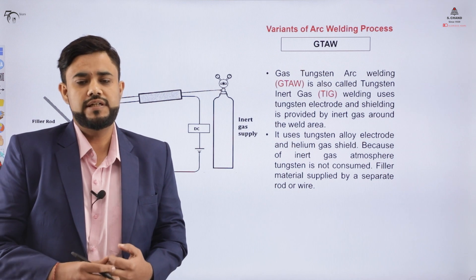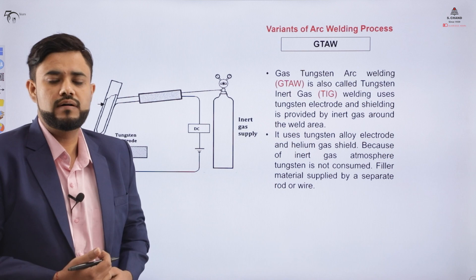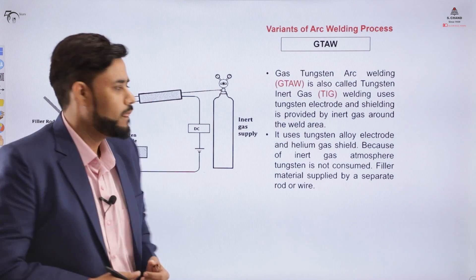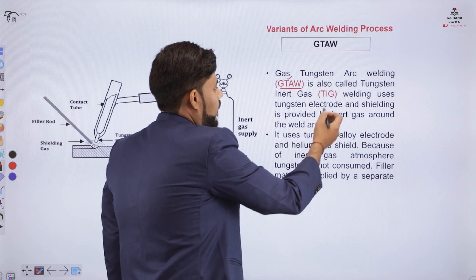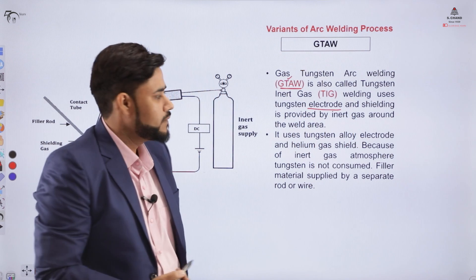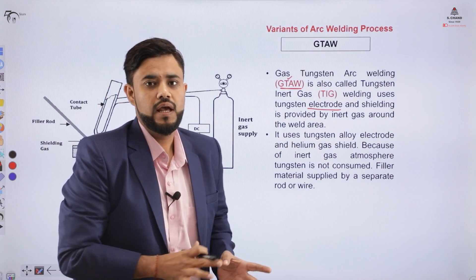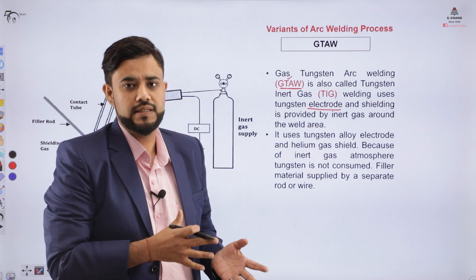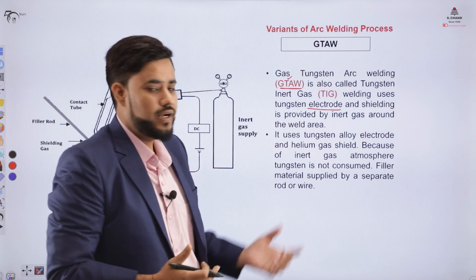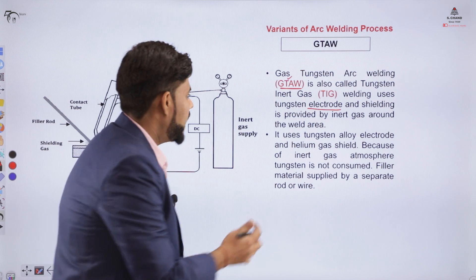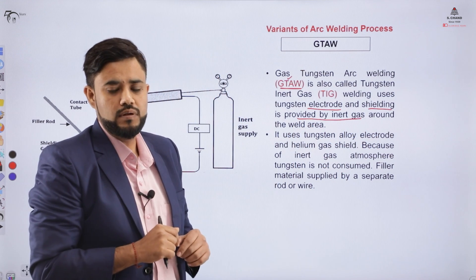The next and last variant is GTAW — gas tungsten arc welding — also called TIG welding or tungsten inert gas arc welding. As the name suggests, tungsten is used as a non-consumable electrode. Comparing to MIG welding where the electrode is consumed in the process, in TIG welding the electrode is non-consumable. Shielding is provided with the help of inert gas over the weld pool or weld area.